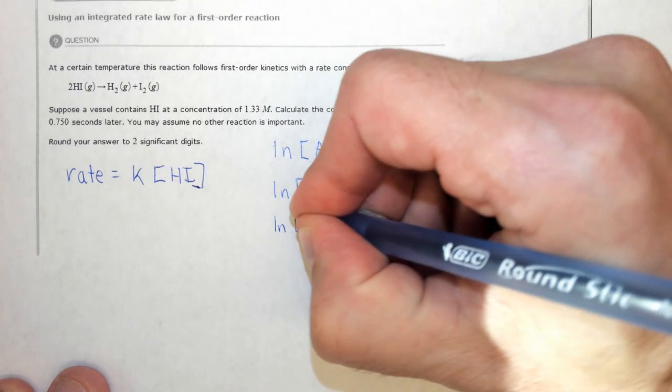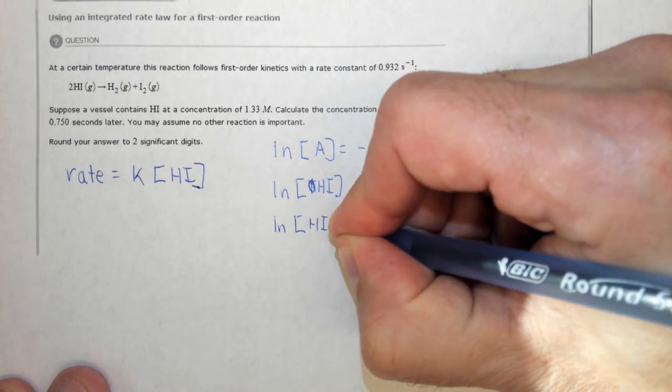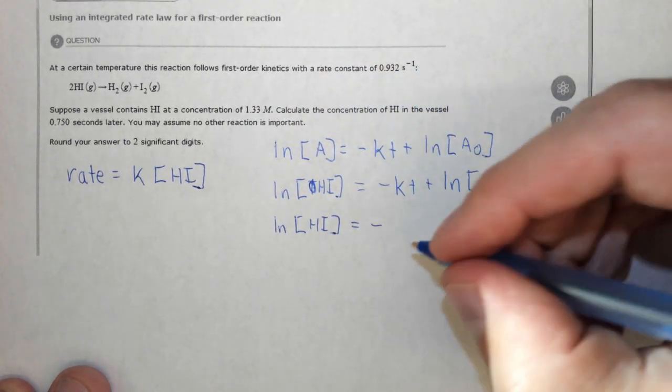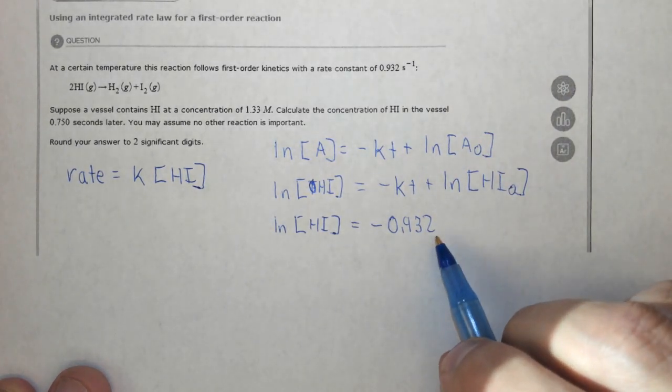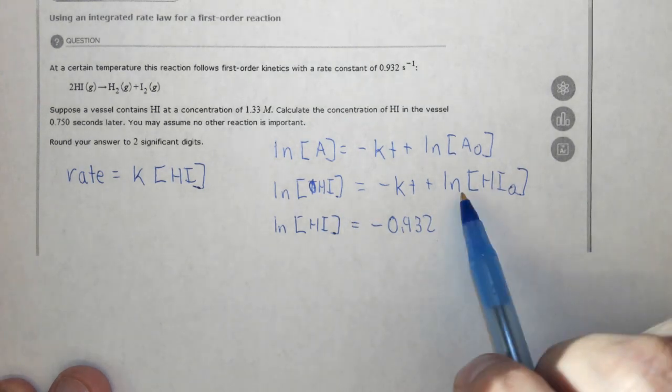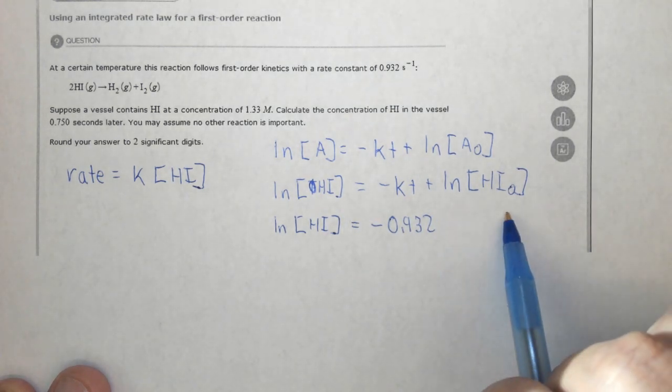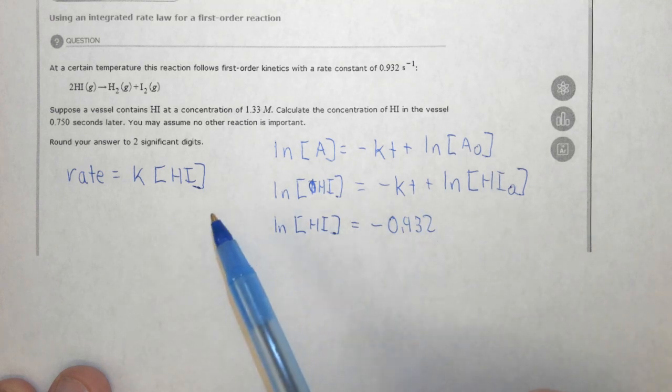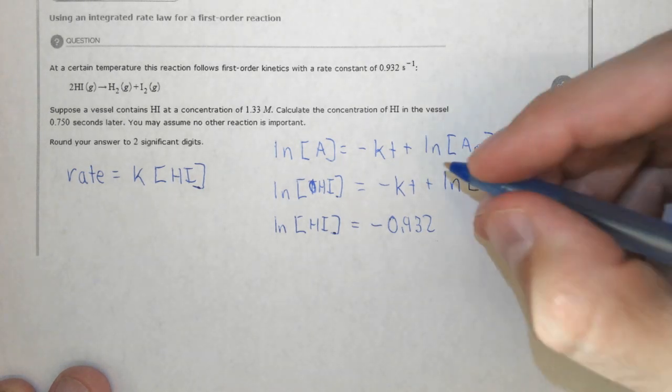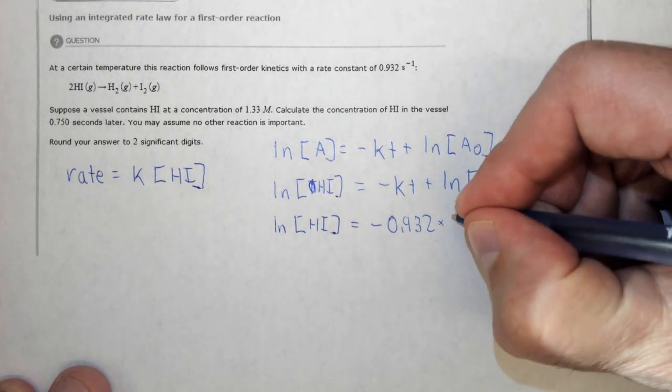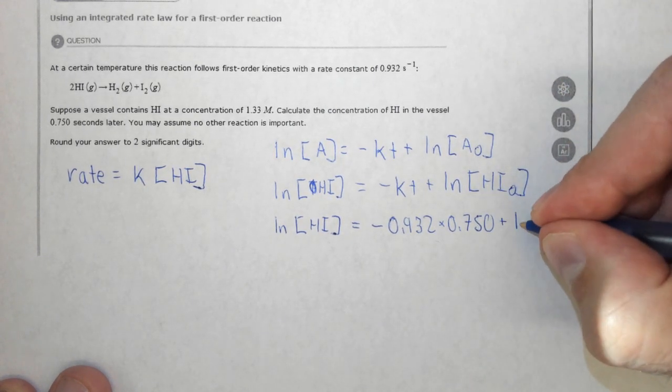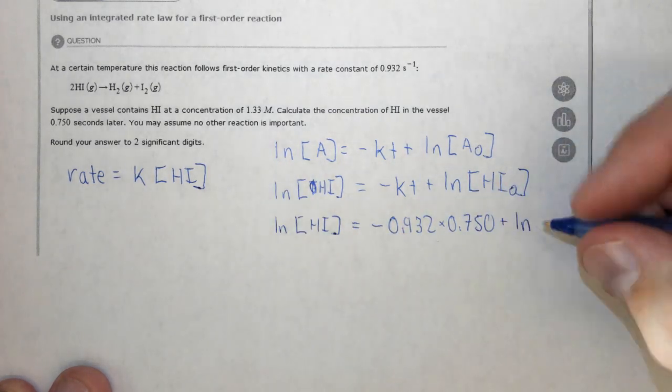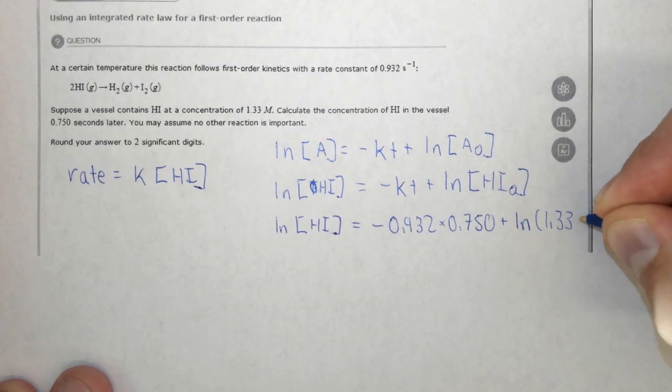Ln of the concentration of HI, the final concentration, that's our variable, equals negative K, which is given, 0.932 s⁻¹. I'm going to ignore units here a little bit, because the units are a little bit confusing when we're doing the ln, and they don't really help us. Just be aware that since we're looking for a concentration of HI, the unit is going to be molarity. The time is 0.750 seconds plus the ln of the initial concentration, which is 1.33 molar.